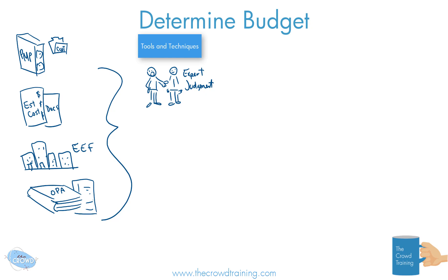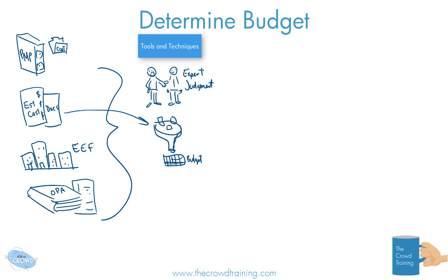Also, if we take all those cost estimates and funnel them together — I'm going to try to draw a funnel here — and we take those estimates and put them all together into whatever package we want to refer to it as, really what we're trying to get to is a budget. So it's an aggregation, and in that case it's called cost aggregation.